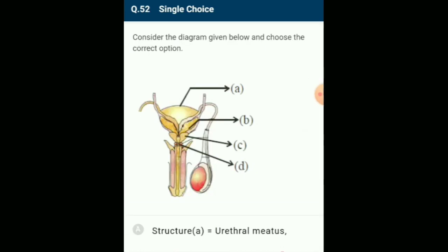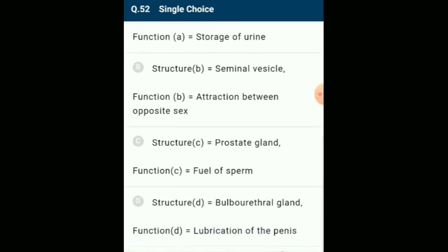Consider the diagram given below: the bulbourethral gland is a pea-sized gland in the male located behind and to the side of the urethra, which discharges a component of seminal fluid into the urethra. The answer is option D: structure D is the bulbourethral gland, with function of lubrication of the penis.